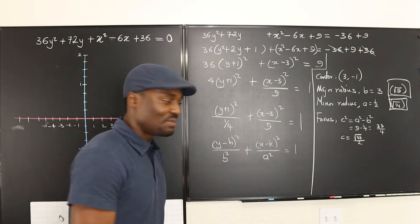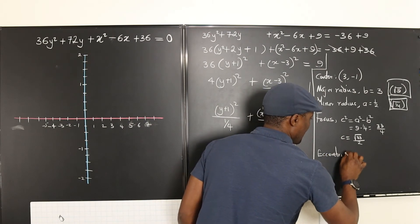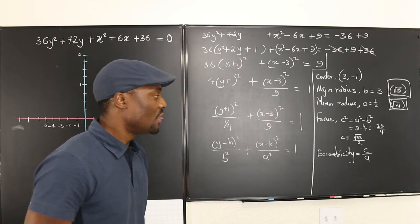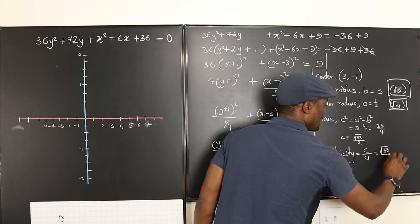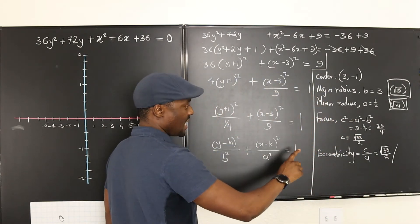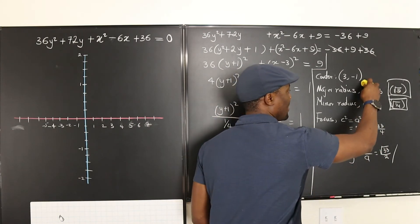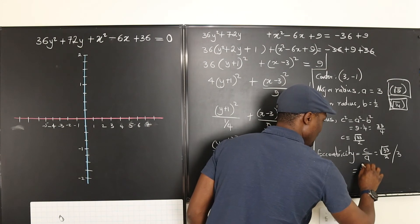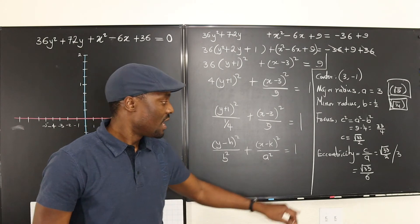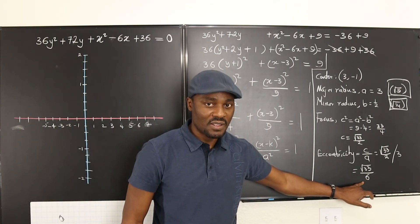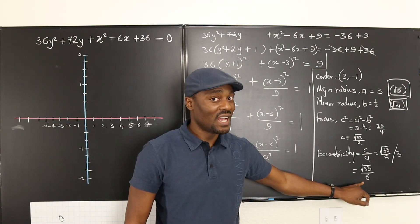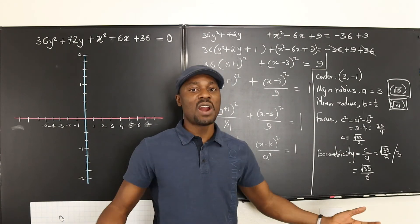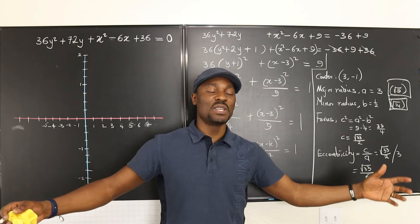The eccentricity of the ellipse is given as C over the major radius. So that's the square root of 33 over 2, divided by 3 — which gives eccentricity equals square root of 33 over 6. Generally for an ellipse, eccentricity must be less than 1. If you don't get a number less than 1, you've done something wrong. For a circle it equals 0, for a parabola it equals 1, and for a hyperbola it's greater than 1.